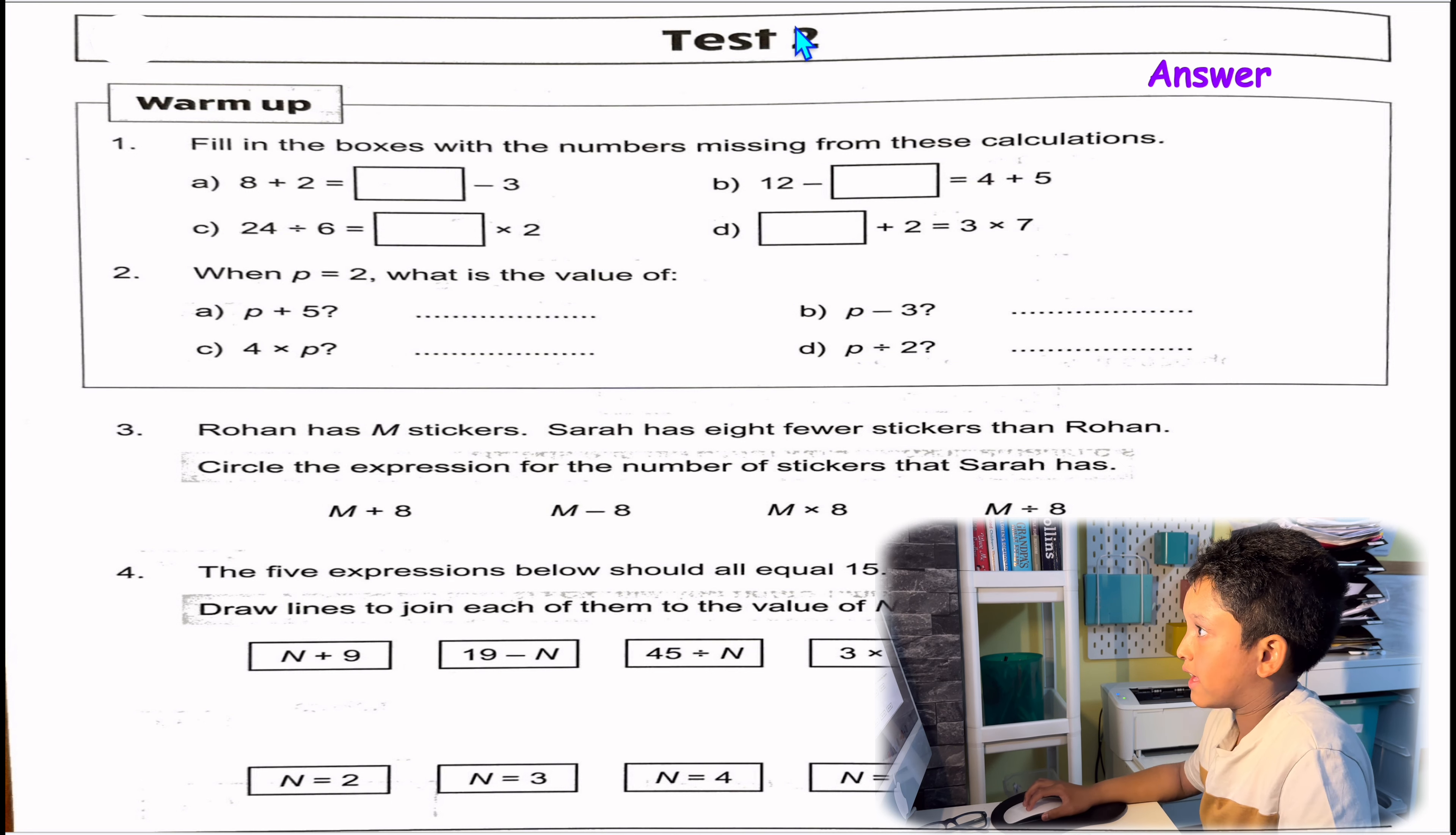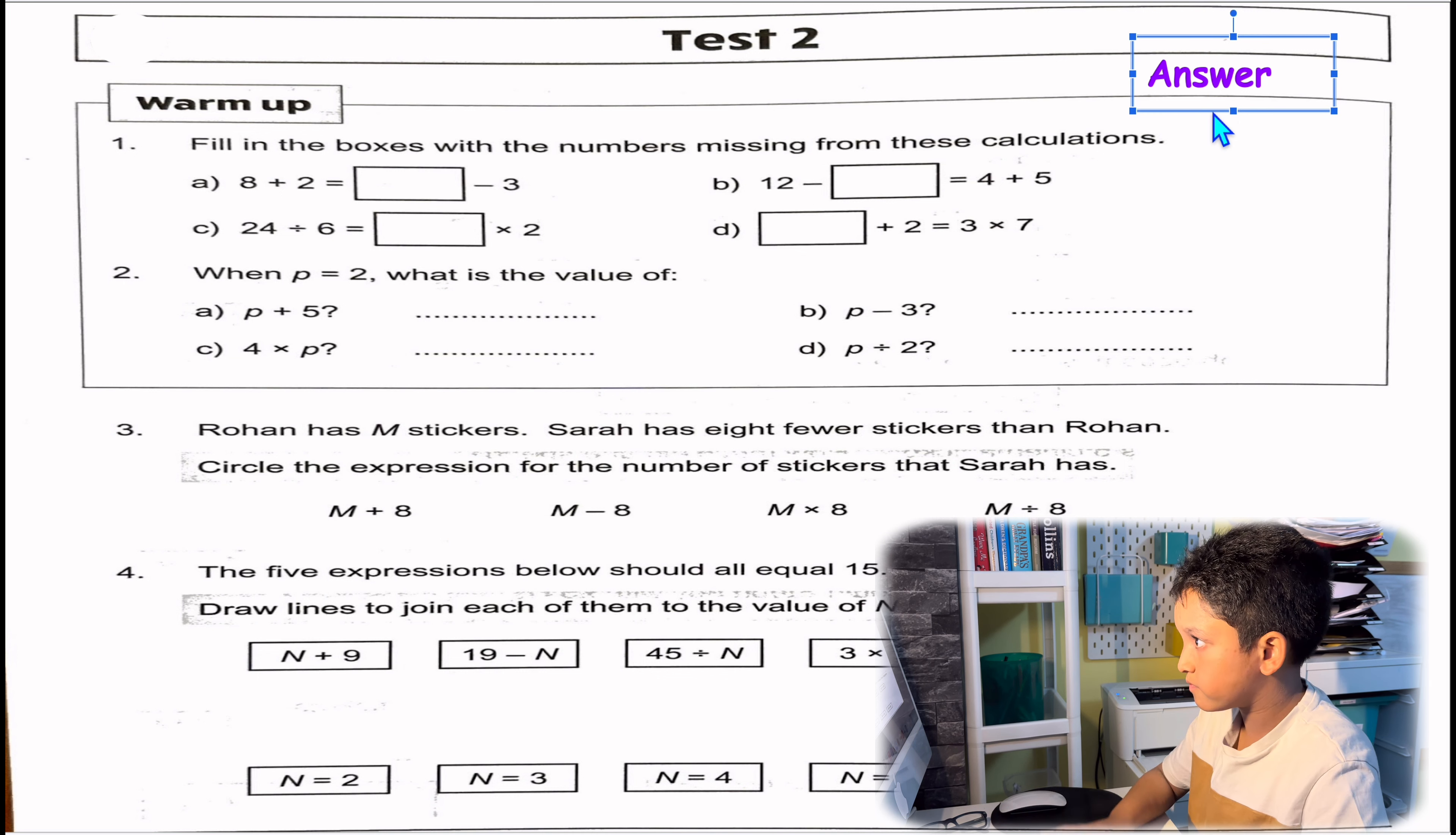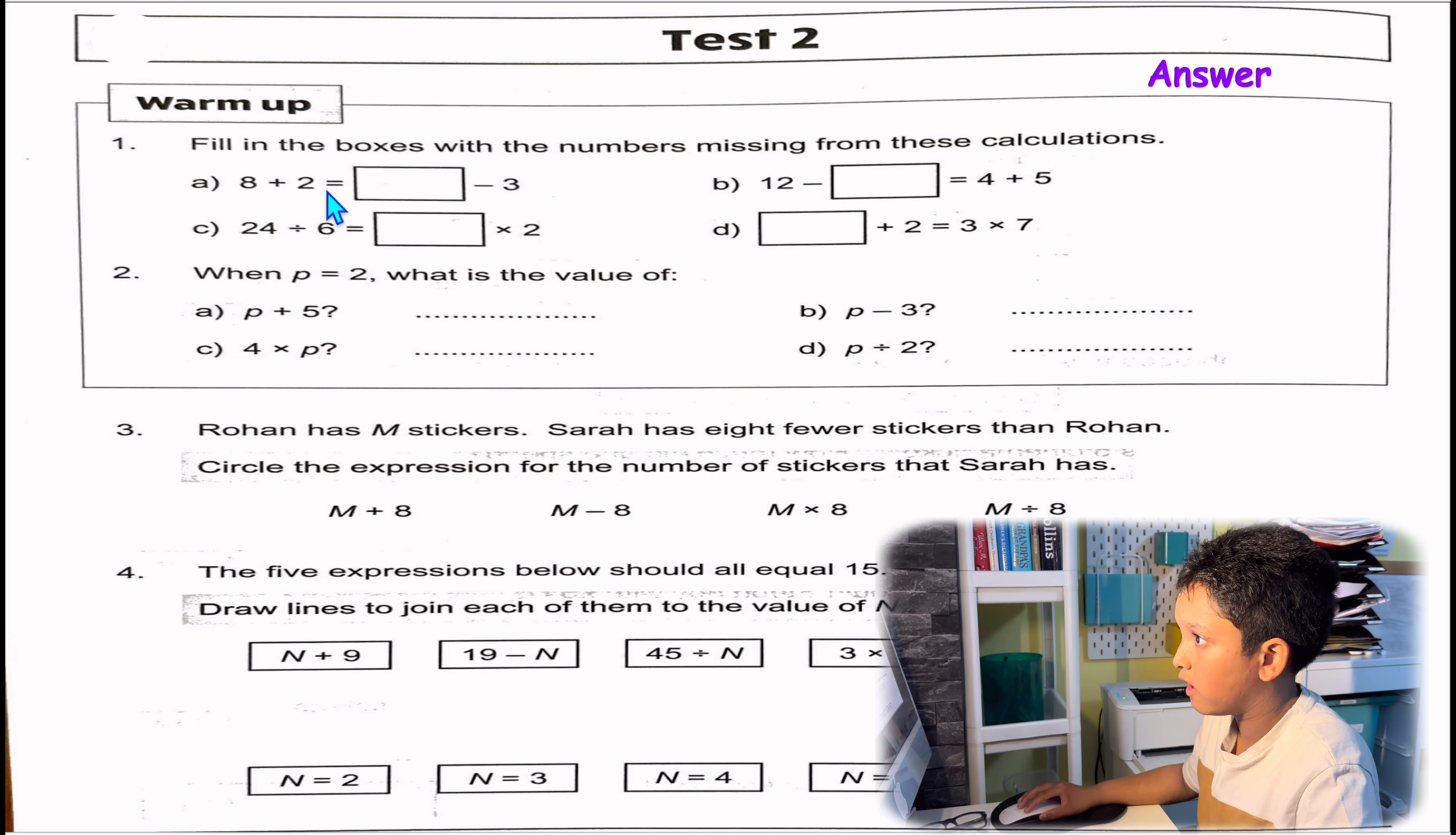So we're doing test 2 today. Question 1: Fill in the boxes with the numbers missing from these calculations. 1a: 8 plus 2 equals 10, but that's not the answer here, which is something take away 3.